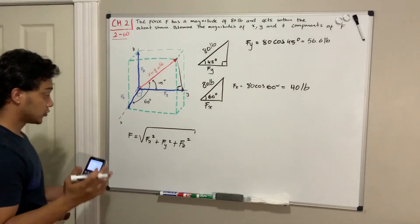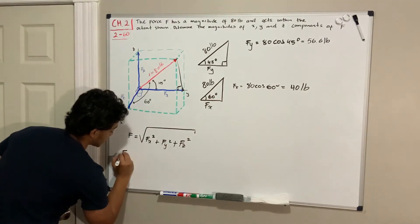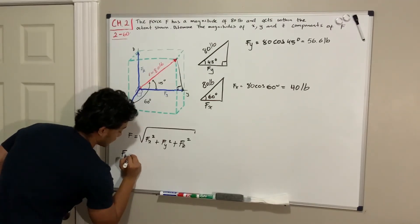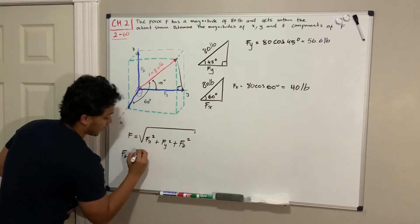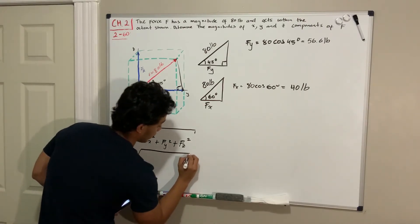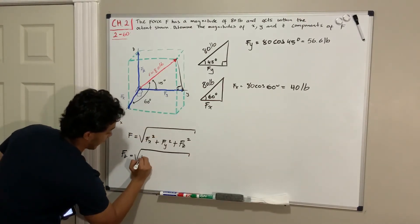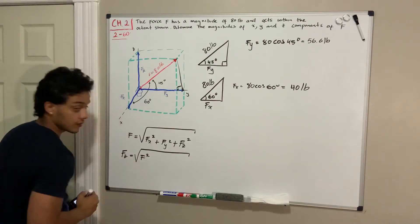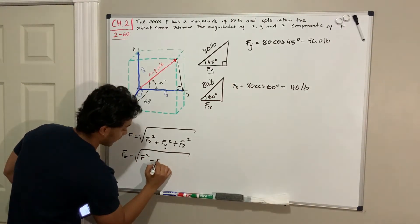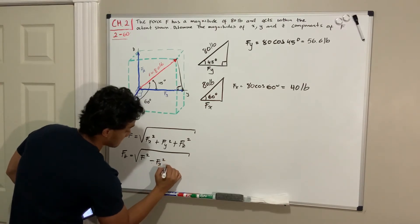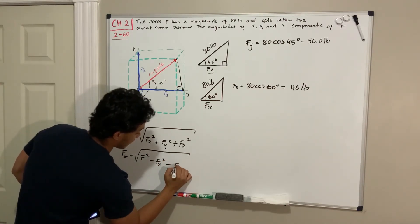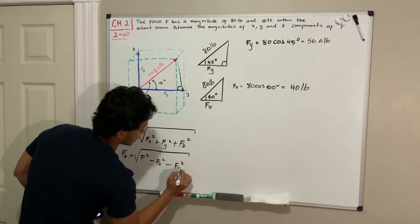If we were to solve for F of Z, basically F of Z is going to be equal to the square root of F squared, the hypotenuse, minus F of X squared minus F of Y squared.